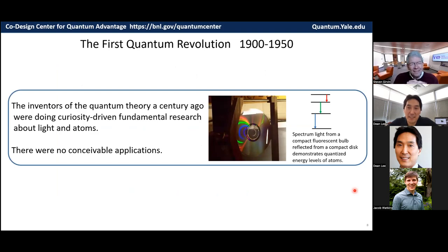The inventors of quantum mechanics, the inventors of the quantum theory a century ago, they were doing curiosity-driven, apparently completely useless fundamental research about light and atoms. There were no conceivable applications. They were doing spectroscopy experiments, and this is one you can do yourself at home. You take a compact fluorescent light bulb, shine it through a little slit, and bounce it off a compact disc.